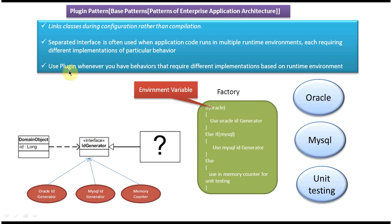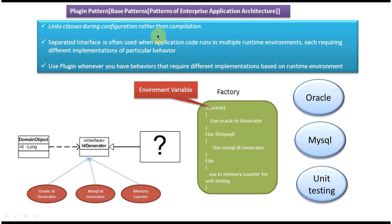As you can see in the explanation here: use Plugin whenever you have behaviors that require different implementations based on the runtime environment. Based on the different runtime environment, our plugin class is varied. Separated interfaces are often used when application code runs in multiple environments. Based on the runtime environment, we are plugging in the appropriate class — that is what is described here. And links classes during configuration rather than compilation — here, we are configuring in the property file what the environment is, and based on that we plug in the generator. That is the Plugin pattern.